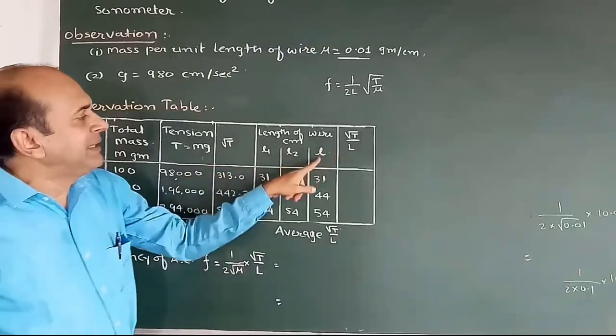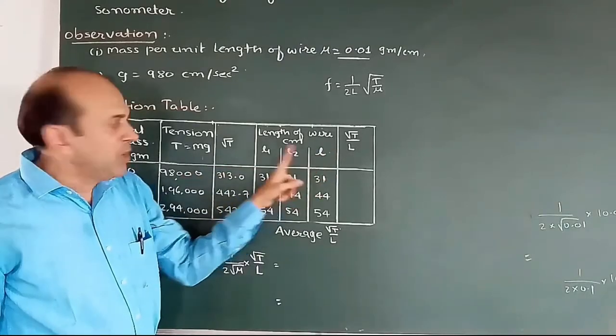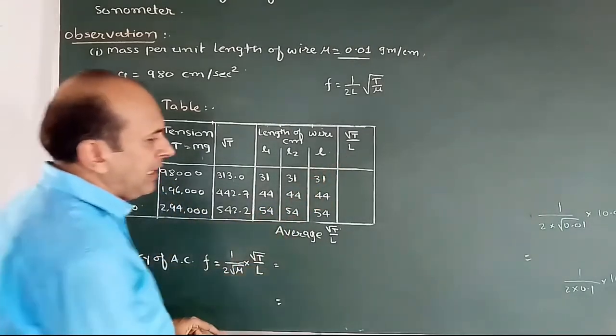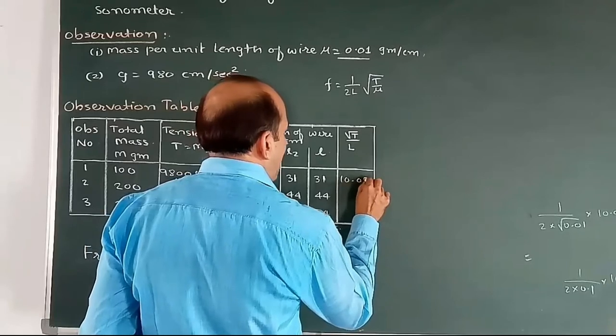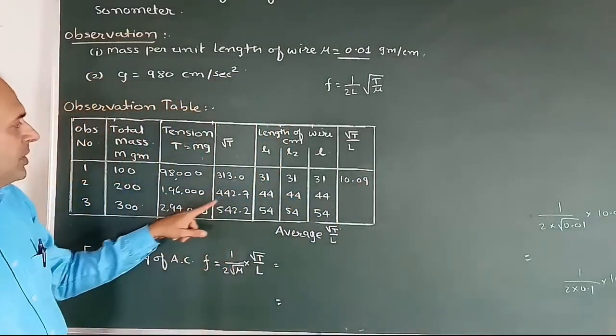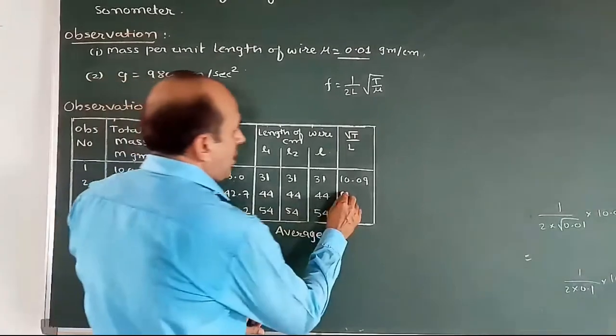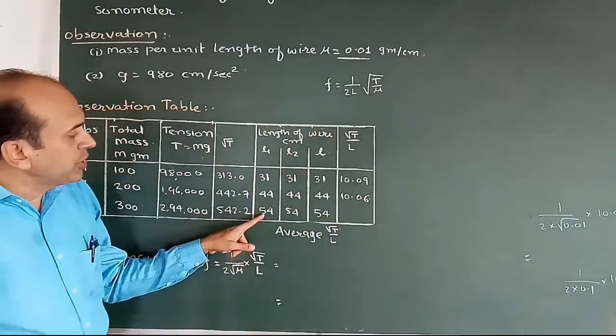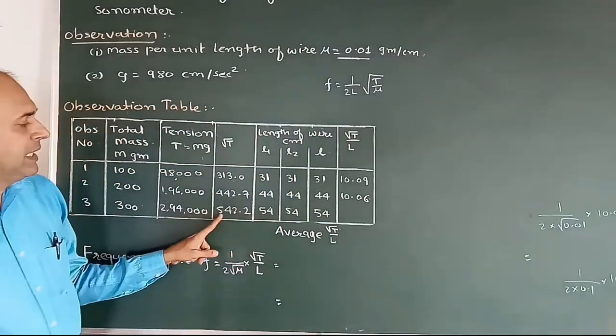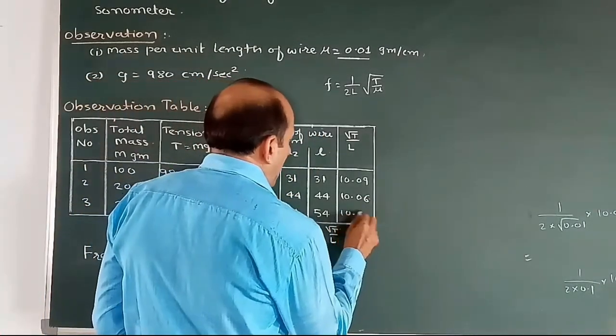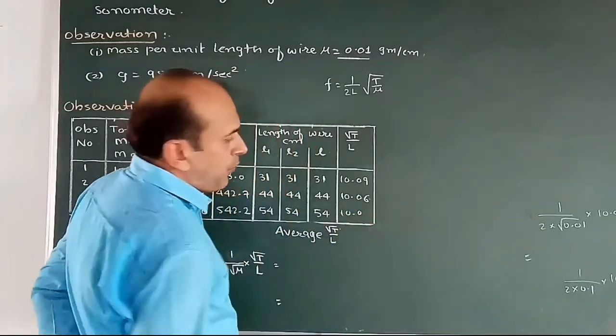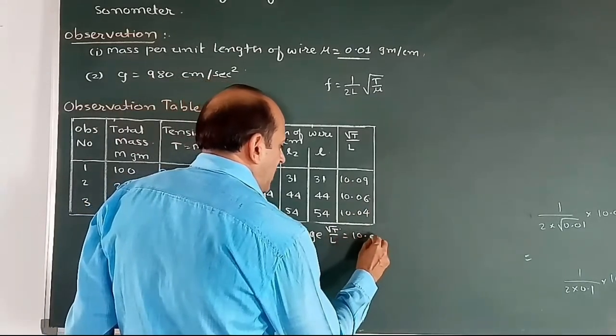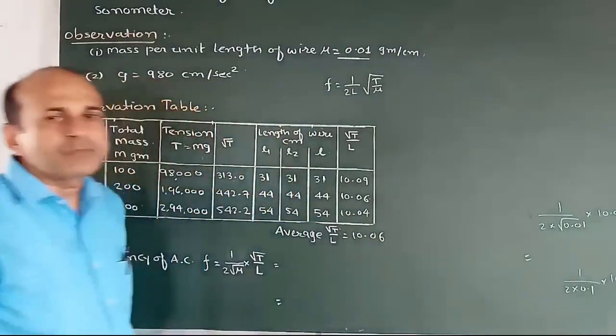Let me find root T divided by L. Root T divided by L, that is root T by L. Let me note down this root T by L is equal to 10.09. For the second calculation, root T dividing by L is equal to 10.06. And for the third calculation, root T dividing by L is equal to 10.04 centimeters. Now, the average of this is equal to 10.06 centimeters.